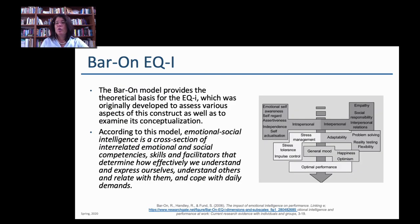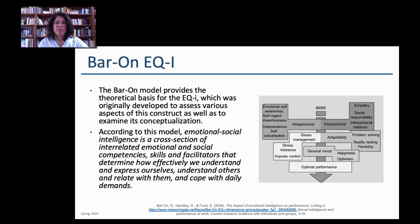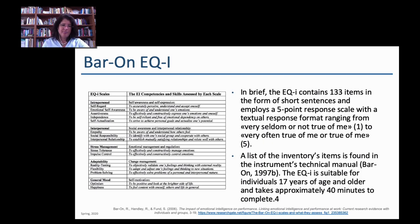Another test developed was the Bar-On Emotional Quotient intelligence test, which looks at different aspects of emotional intelligence and how people react to situational models. According to this model, emotional-social intelligence is a cross-section of interrelated emotions, social competencies, skills, and facilitators that determine how effectively we understand and express ourselves, understand others, and cope with daily demands. The test has 133 items — short sentences people respond to — using a Likert scale. Like Mayer and Salovey, they don't say you have or don't have EI; they use gradient scales showing where people are stronger or weaker.